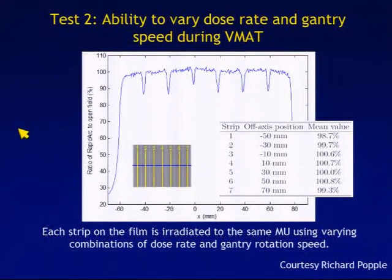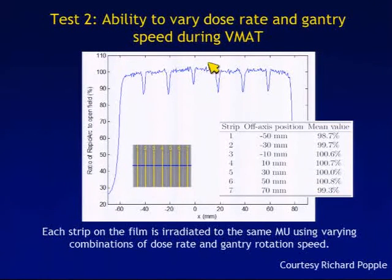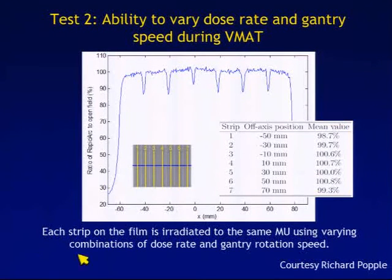The second test is testing the ability to vary the dose rate and gantry speed during VMAT. On the film, a series of strips are delivered, with each strip irradiated to the same monitor units using varying combinations of dose rate and gantry rotation speed. The results show strong uniformity between the various strips.